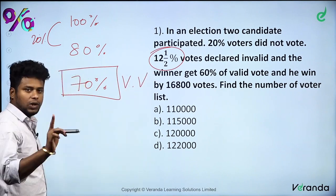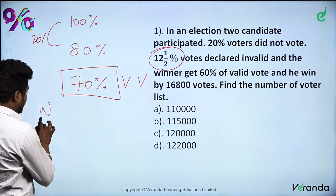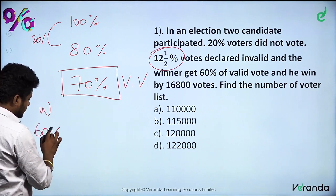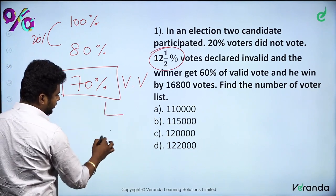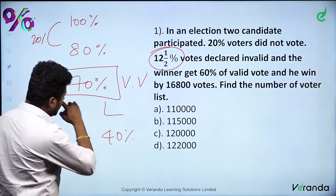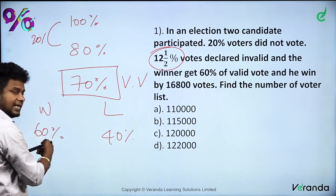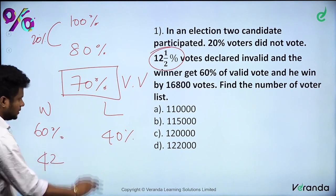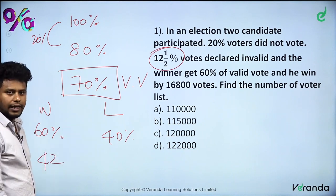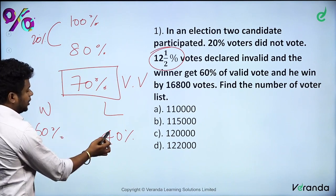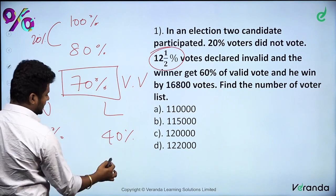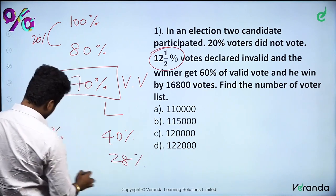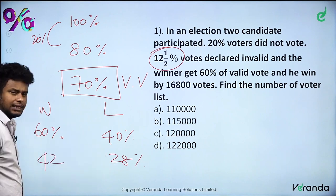In that valid vote, the winning candidate gets 60%, and the loser gets 40%. So the winner gets 60% of 70% — that is 6 × 7 = 42%. The loser gets 4 × 7 = 28%.